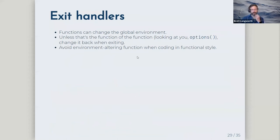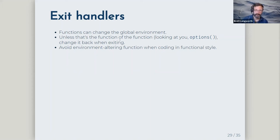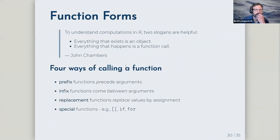Functions can change their global environment, which is sometimes useful but should be used carefully in functional style. Unless the goal of your function is to change the global environment permanently — like options() — you should change it back when exiting, and on.exit() is the way to do that.